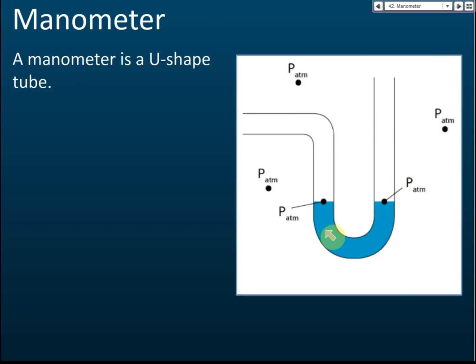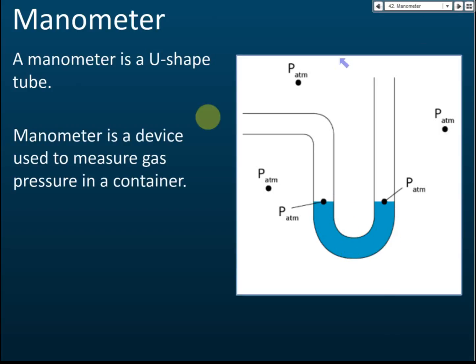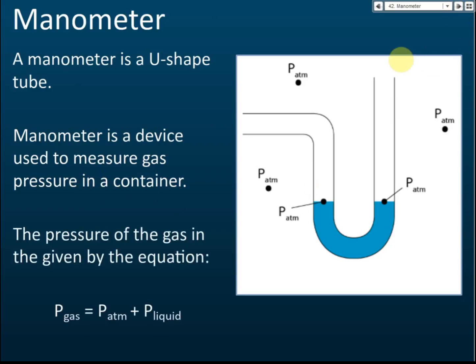Usually we use mercury as the liquid in a manometer. The reason we use mercury is because its density is very high. Because the density is very high, even when the pressure is very high, the liquid will only move a little bit. A manometer is the device used to measure gas pressure in a container.